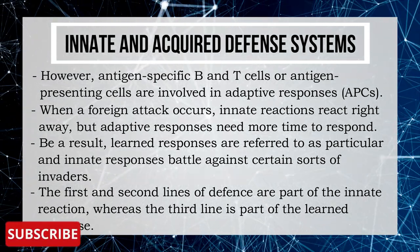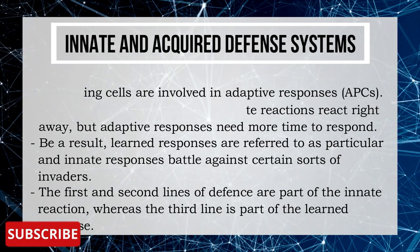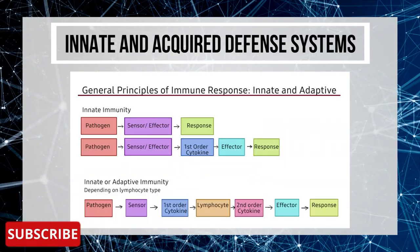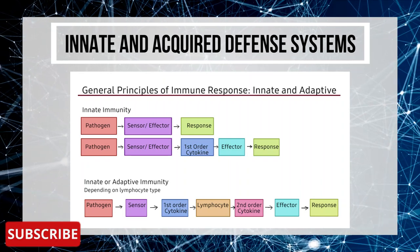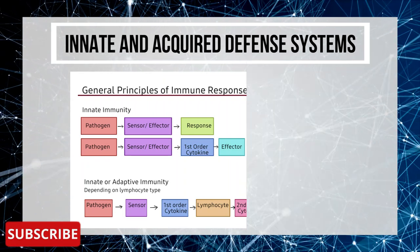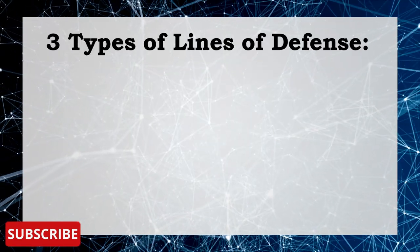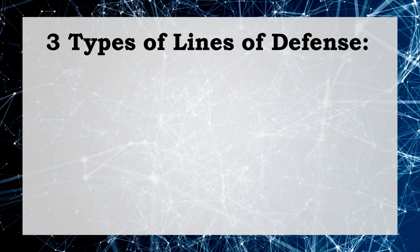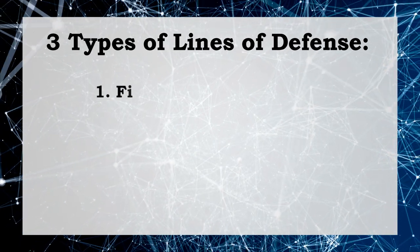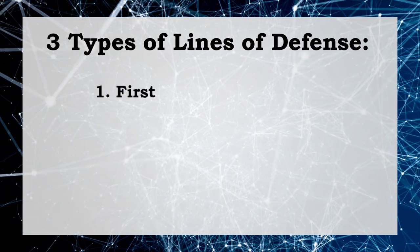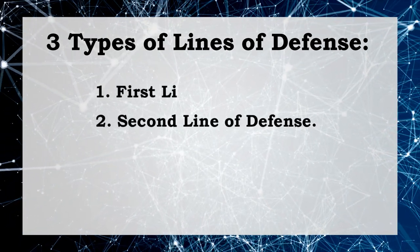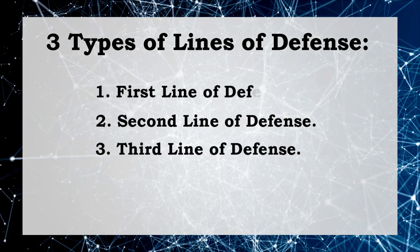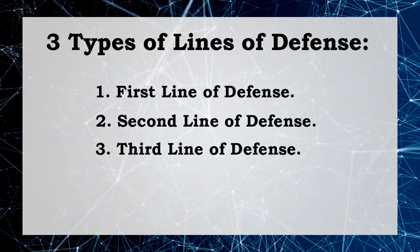With the help of this diagram, you can see the general principle of immune response. Basically there are three types of lines of defense: number one, first line of defense; number two, second line of defense; and number three, third line of defense.